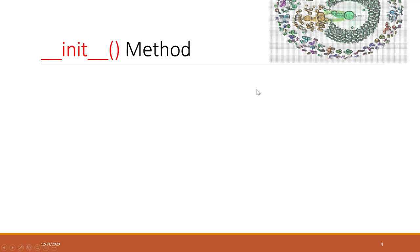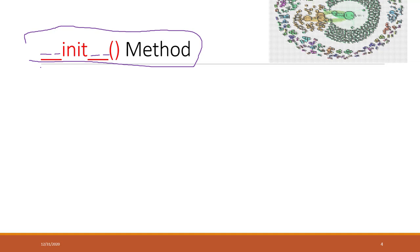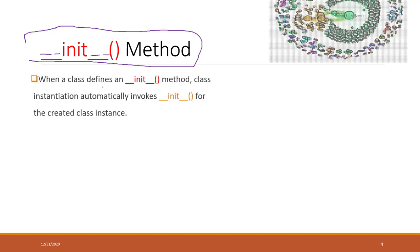Let's dive deep into the class. First, let's introduce the initial method — `__init__`. This is a special method in a class. When the class defines this initial method, the object created from this class will automatically invoke this method, automatically invoking it for the created class instance.